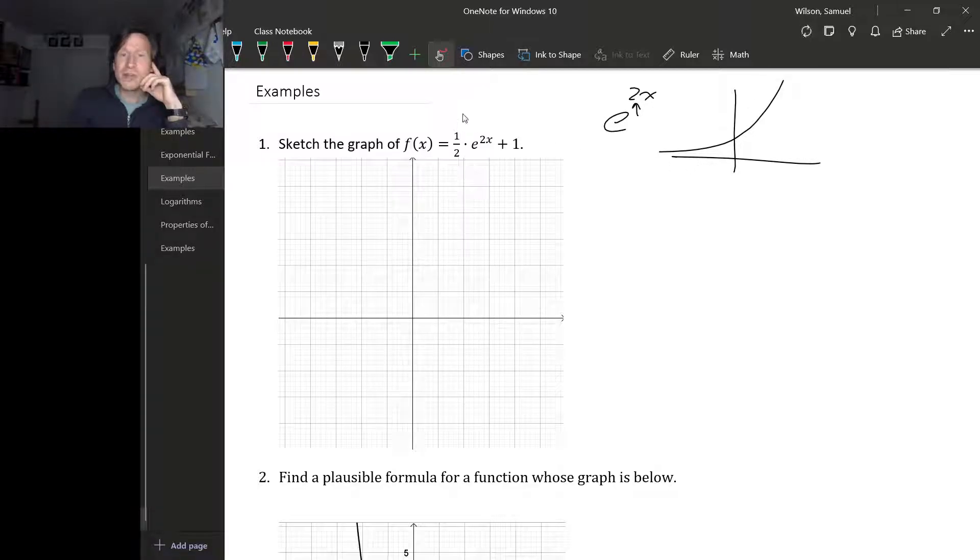Multiplying this by a half shrinks it vertically. So it's still going to look like exponential growth, but it doesn't grow quite as fast. Then this plus 1 shifts it up 1. So instead of a horizontal asymptote at 0, we're going to get a horizontal asymptote at 1.